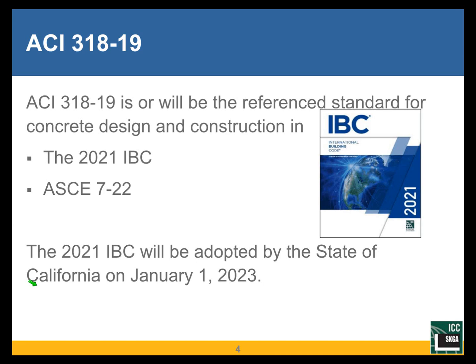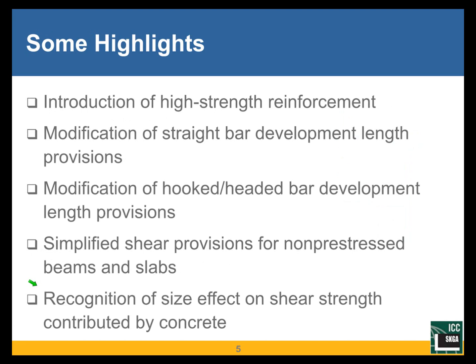I decided it would be good to have a couple of slides to tell you about the big changes in ACI 318-19, and I'll go over them quickly because they will be treated in more detail later. These include: introduction of high-strength reinforcement with yield strength up to 100 KSI; modification of straight bar development length provisions; and modification of hooked and headed bar development length provisions.